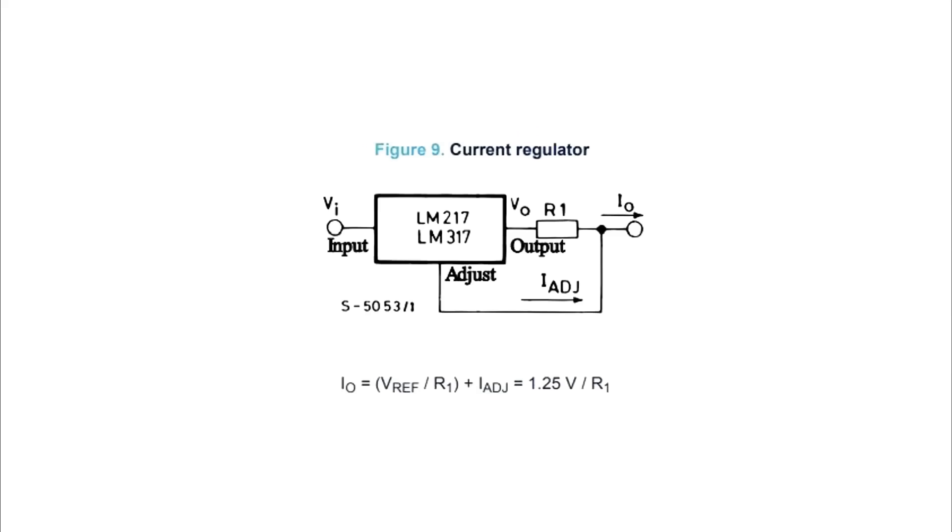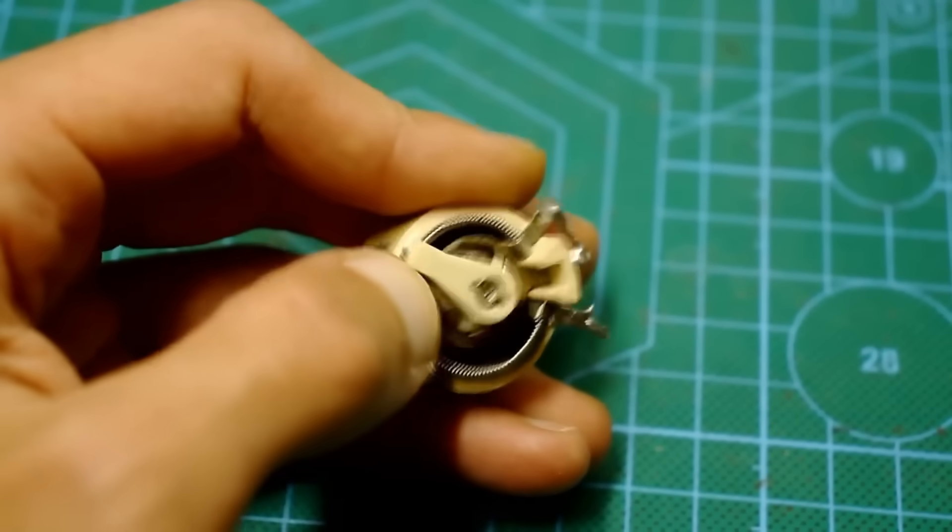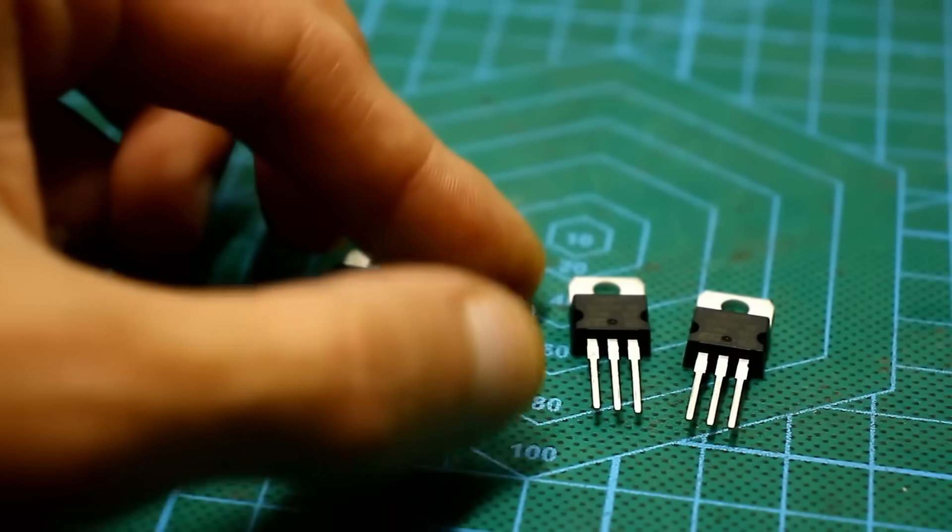The calculation of the output current is done according to the specified formula. For current adjustment, powerful wire wound variable resistors can be used. As mentioned earlier, the chip has overload protection as well as thermal protection.